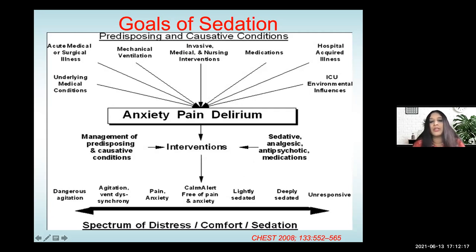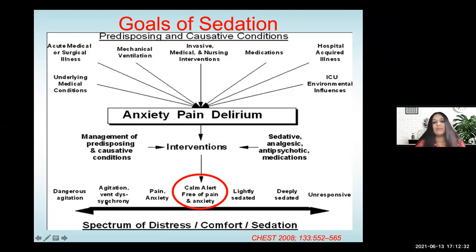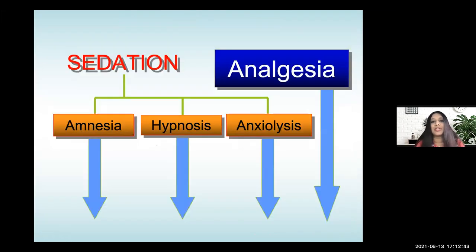What we want our patient to be is somewhere in the spectrum between dangerous agitation and unresponsiveness. Our goal is really to keep the patient calm, alert, and free of pain. So in this entire spectrum of distress, discomfort, and sedation, this is where we want our patient to be. If you keep this goal in mind, it's very easy to understand the practice of sedation and analgesia.